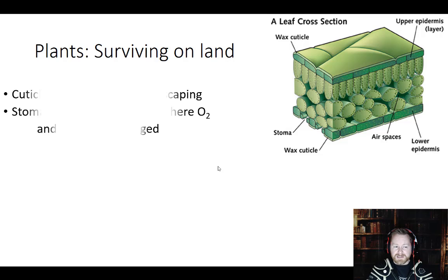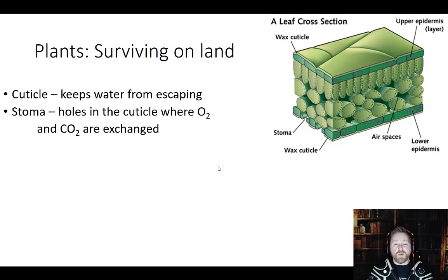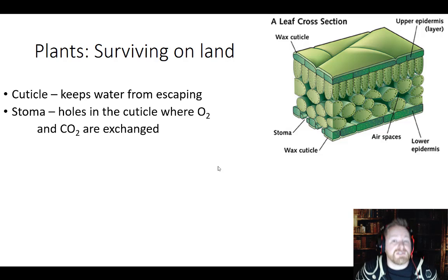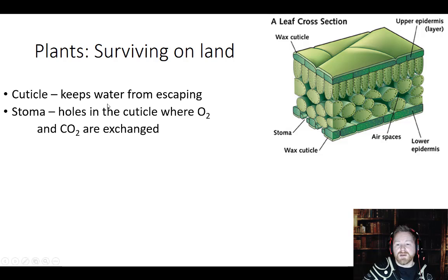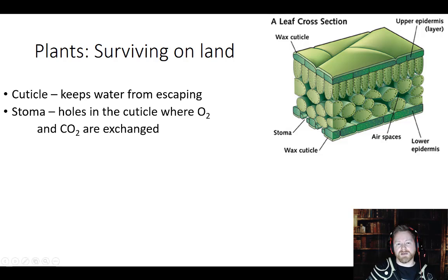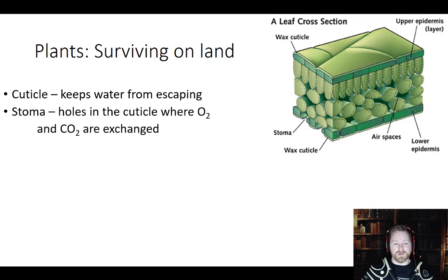The first thing is making sure that you can keep water inside your body. If you're floating in water you don't have to worry about that, but on land it dries out — you've got to make sure your cells have water. So plants evolved a cuticle, which is a waxy coating that keeps water from escaping. If you go to the grocery store and rub your finger on an apple, you'll scratch off that waxy coating — that's the cuticle.